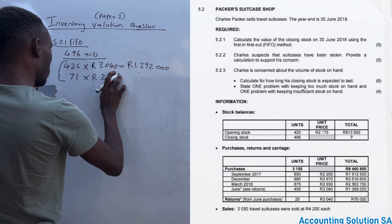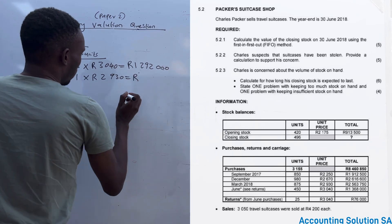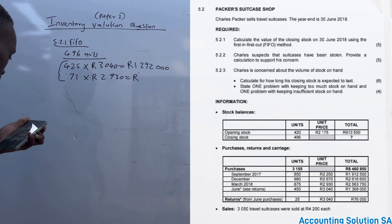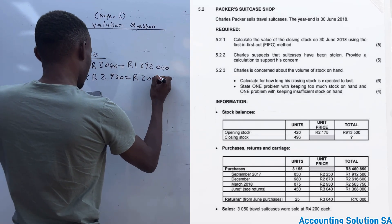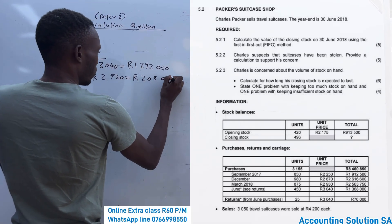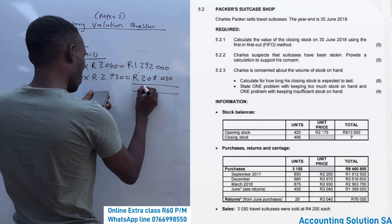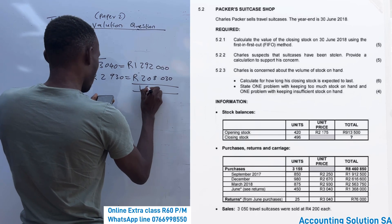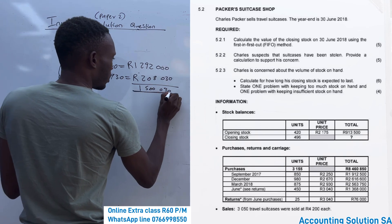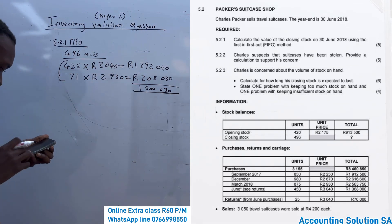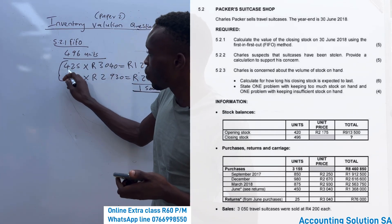The March price is R2,980. Multiplying 71 units by R2,980 gives us R211,580. After that, we add the two amounts together to get the total closing stock of R1,508,000. That is how you calculate first-in first-out. Adding the two batches gives you 496 units.